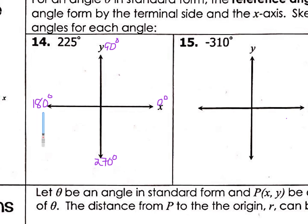So 180 plus 45 is 225. We are going to start here with our initial side, put our terminal side right about here, and this is our angle from here to here. That angle is going to be 225 degrees because it's somewhere in between 180 degrees and 270 degrees.